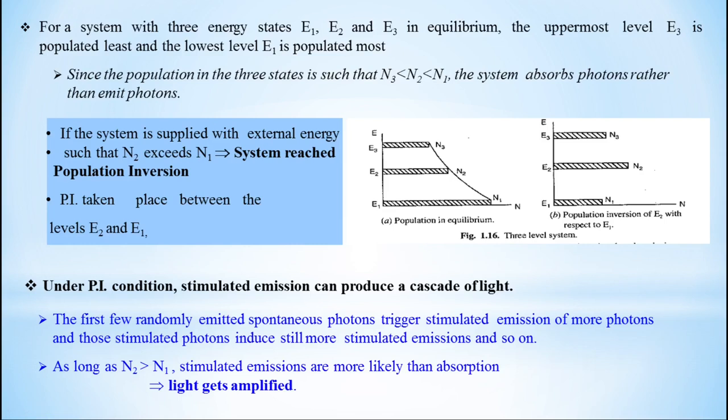The first few randomly emitted spontaneous photons trigger stimulated emission of more photons, and those stimulated photons induce still more stimulated emissions, and so on. This amplification process will in turn increase the stimulated emissions to get lasing action. As long as N2 is greater than N1, stimulated emissions are more likely than absorption, therefore light gets amplified. This is all about the population inversion process.